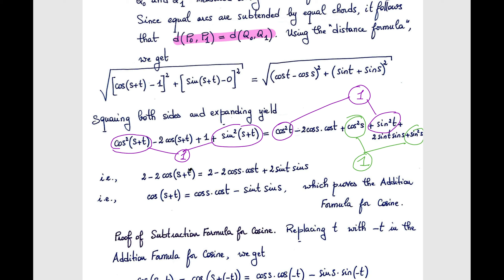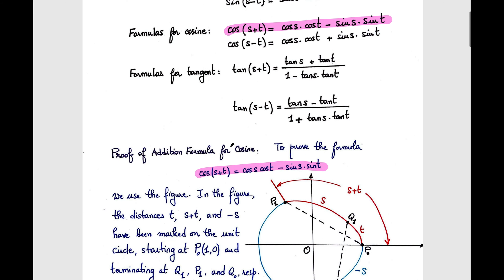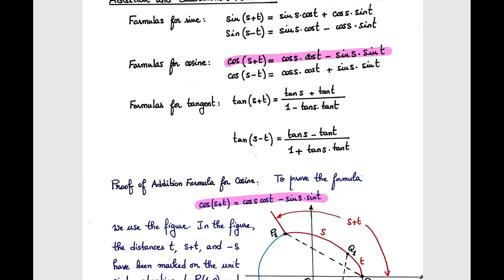Subtract 2 from both sides — that cancels the 2 on each side — then divide by -2. We get cos(s+t) = cos s cos t - sin s sin t. That completes the proof of the addition formula for cosine.